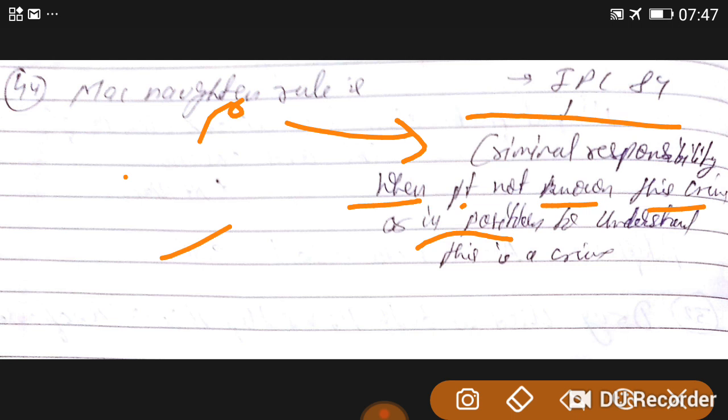That's why in such situations, according to the McNaughton rule, this does not count for punishment. He doesn't deserve punishment because his mental status is not well, or he does not know that this is a crime.